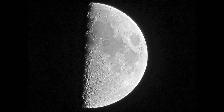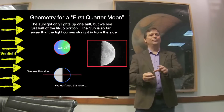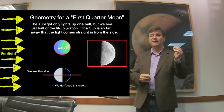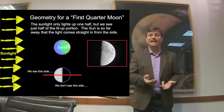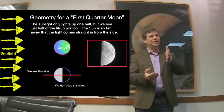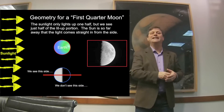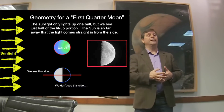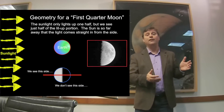A few days later we see what we call a first quarter Moon. A first quarter Moon, to some people, looks like a half Moon, but we call it a quarter Moon because we only see the light from one quarter of the Moon. Half of the Moon we don't see, which is the far half. The near half we see, but only half of the near half is illuminated — so that's one quarter of the Moon. It also corresponds to when the Moon is 90 degrees around its orbit around the Earth, so that's a quarter of the way through its orbit — that's its first quarter.